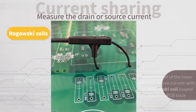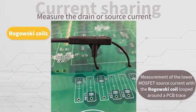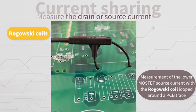Here you can see the measurement of the lower MOSFET source current with the Rogowski coil looped around a PCB trace.